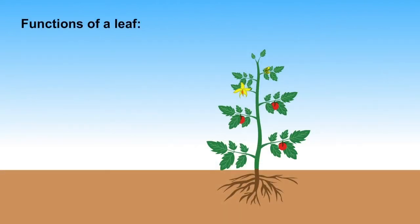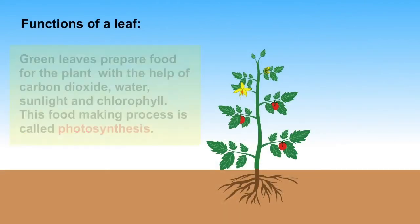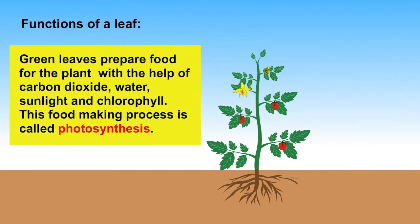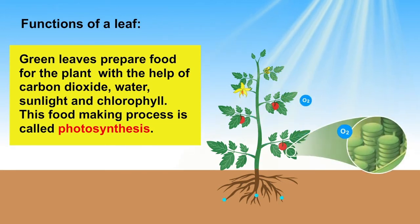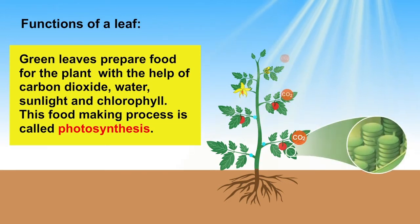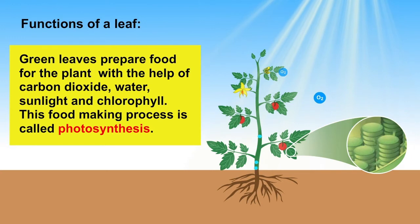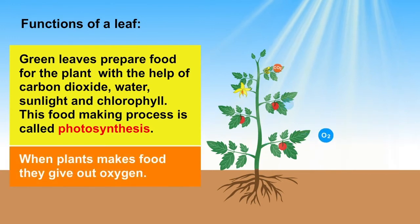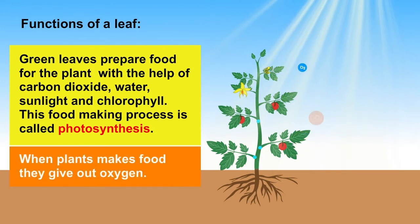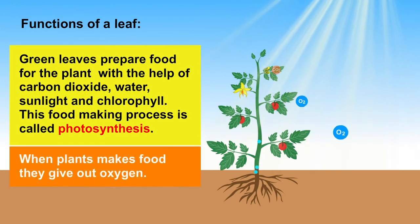Functions of a leaf: green leaves prepare food for the plant with the help of carbon dioxide, water, sunlight, and chlorophyll. This food-making process is called photosynthesis. When plants make food, they give out oxygen.